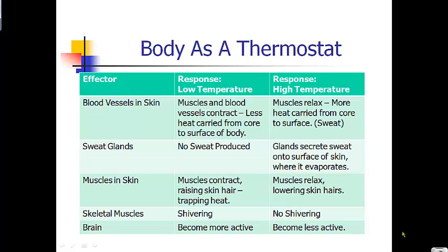That blood can be cooled by your sweat. If your body temperature is too low, your sweat glands will not produce any sweat. If your body temperature is too high, your body will create sweat from your sweat glands to the surface of your skin, and that sweat will evaporate, causing you to cool down. If your body temperature is too low, your muscles will automatically contract and the hair on your skin will start trapping heat. If you are too hot, your muscles relax and those skin hairs lower, letting out the heat.